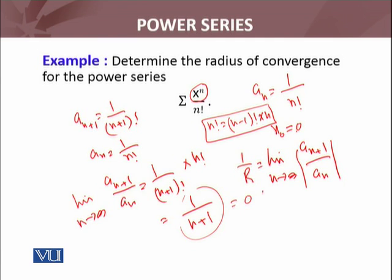Then this limit will be 0. The radius of convergence of that power series is 1 over r. So r will be 1 over 0, and 1 over 0 is infinity. So this power series converges throughout the real numbers.